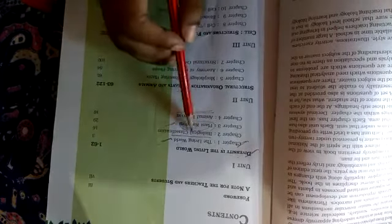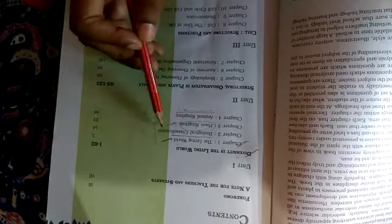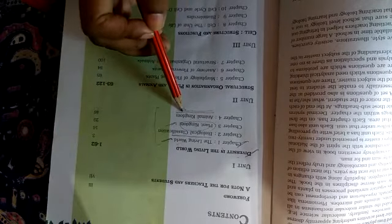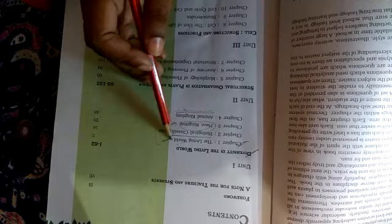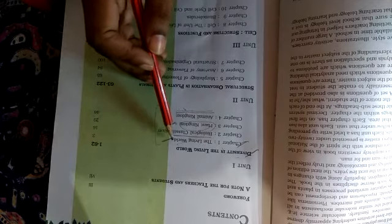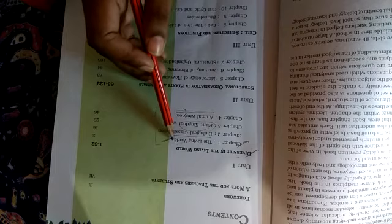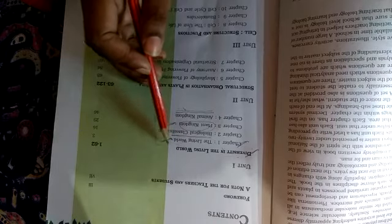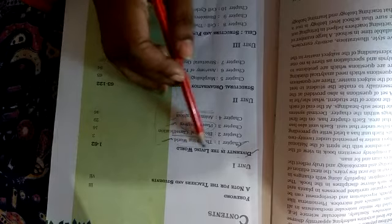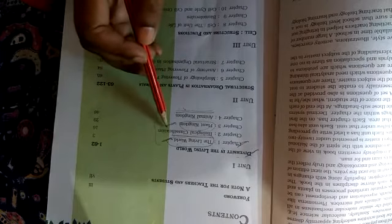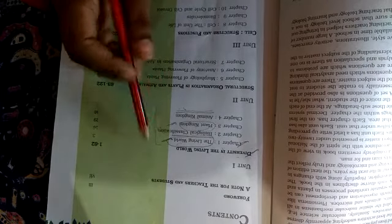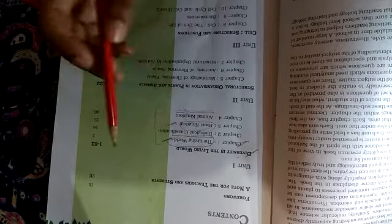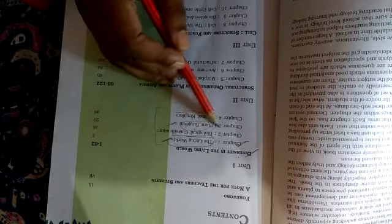In this unit we have to study four chapters: The Living World, Biological Classification, Plant Kingdom, and Animal Kingdom. In The Living World we will know about the fascinating world of the living, its characters, its taxonomical groups and taxonomical aids - where we can get help to recognize or get the source of knowledge of the living world. The second chapter is Biological Classification, where living organisms are classified. The third chapter is devoted to all plant kingdoms from algae to angiosperms.